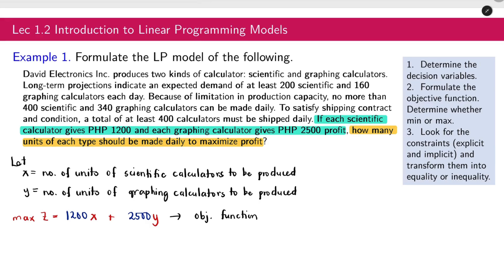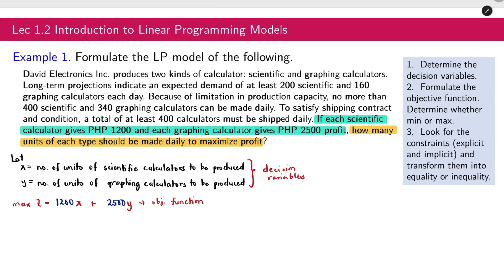For starters, let's put a label. This is our decision variables. After writing the objective function, below it, you should write subject to the following constraints. What are the constraints?